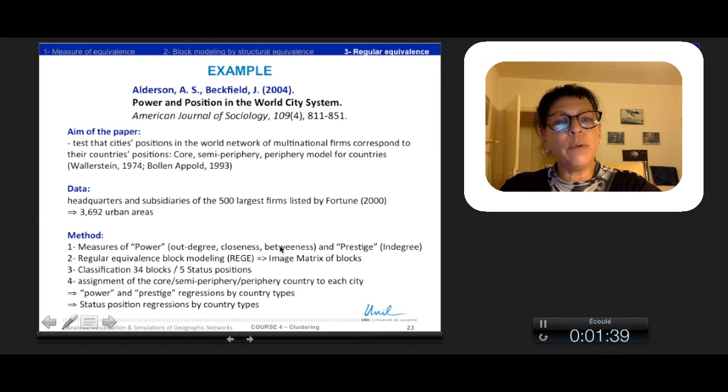I will present now a paper of Alderson and Beckfield on power and position in the world city system that is a good example of the use of this regular block model. The aim of the paper is to test that cities' positions in the world network of firms corresponds to their country positions.